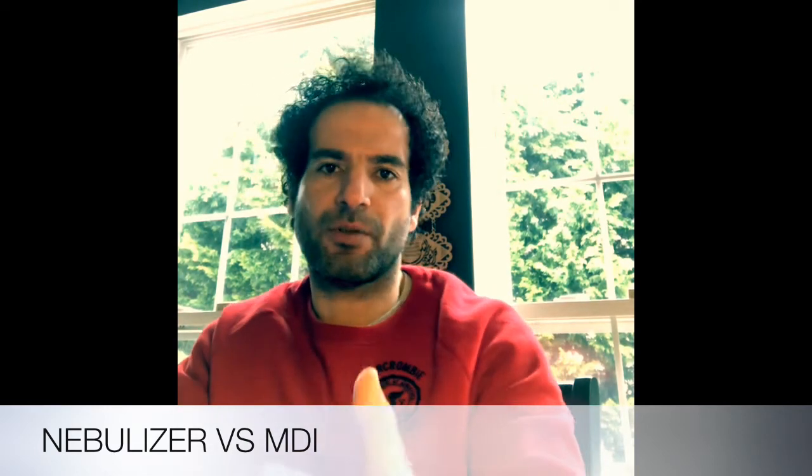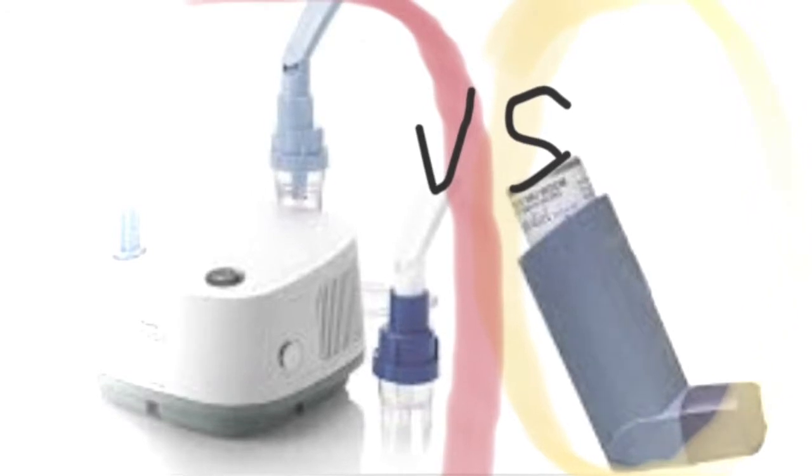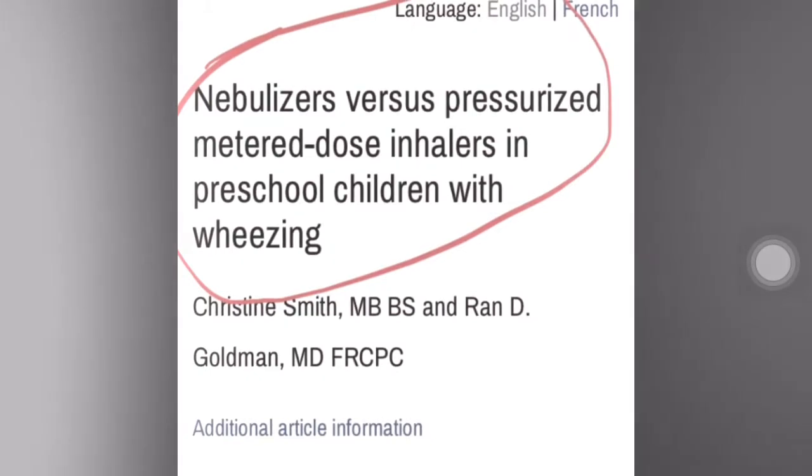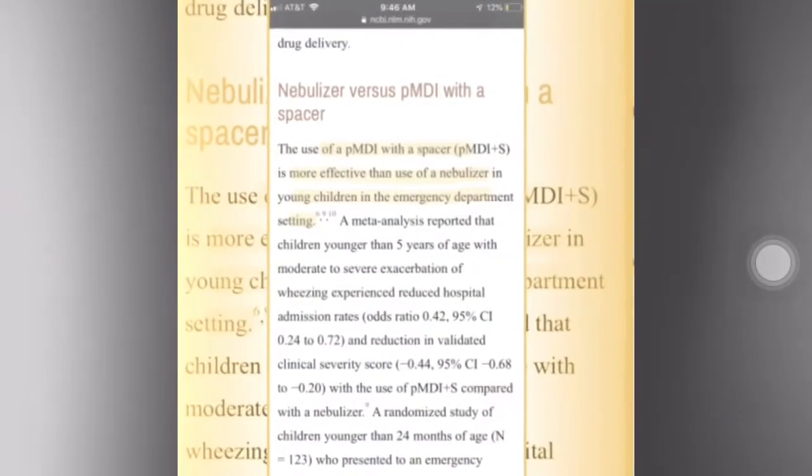The inhaler comes in two different forms of administration: the MDI, which is the puffer, or the solution for nebulizer that you put in a machine and inhale through a mask. It's the same drug — albuterol — but a study was done to compare giving that same drug through the inhaler versus the nebulizer. They compared two groups at the ER: one with the albuterol inhaler and the other with the solution for nebulizer. The group that used the MDI did better.